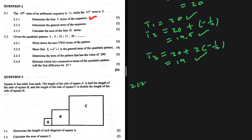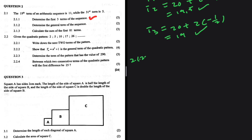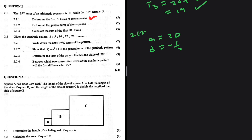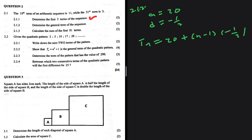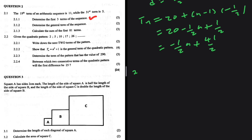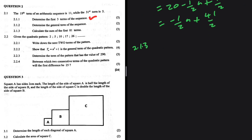So t1, t2, t3 are 20, 19.5, and 19. For part 2.1.2, determine the general term. We have a equals 20 and d equals negative 1 over 2. So tn equals 20 plus n minus 1 multiplied by negative 1 over 2, which simplifies to negative 1 over 2 times n plus 41 over 2.